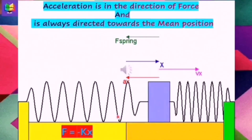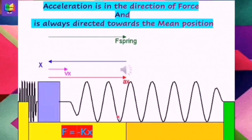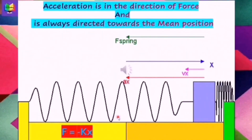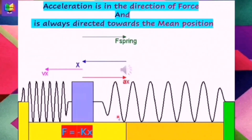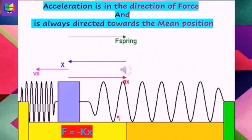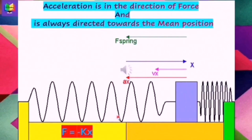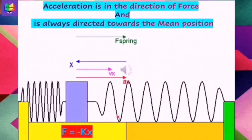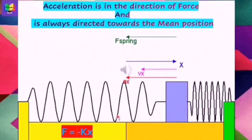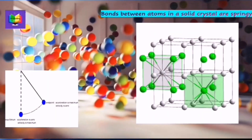We can also see from the arrows shown that they indicate the direction of force, displacement, and acceleration. It is very clear that force and acceleration are always directed towards the mean position.